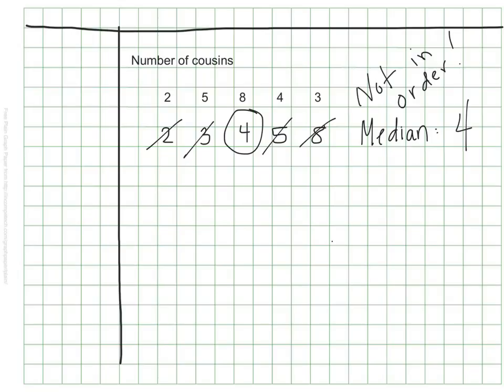This data set was fairly straightforward because this was an odd number of pieces of data. What if we ask an even number of people the same question? Once again, my first step is to make sure that my data is placed in order from least to greatest. So I'm going to go ahead and rewrite these in order.